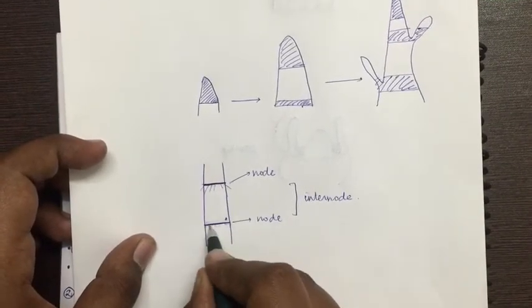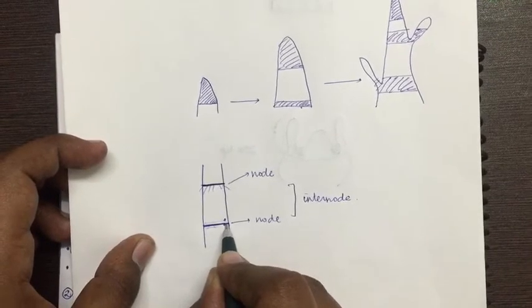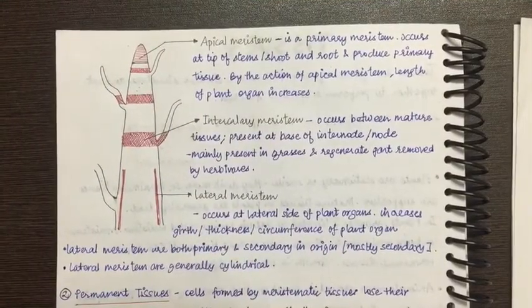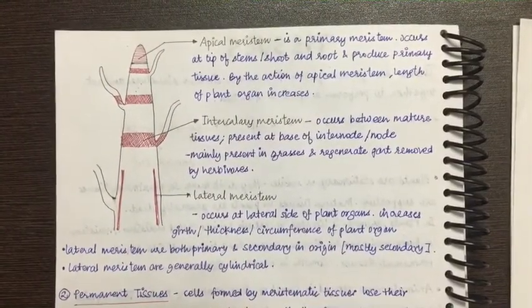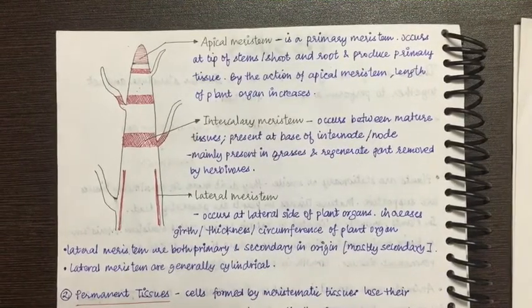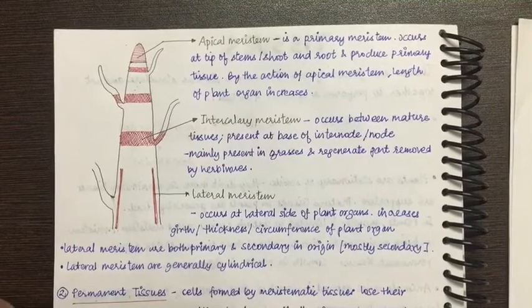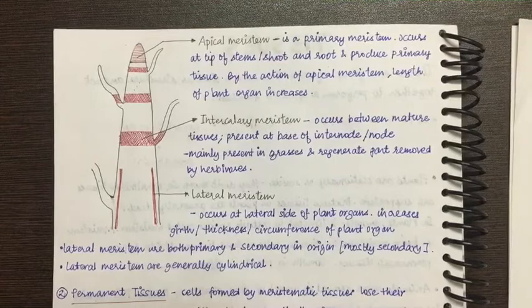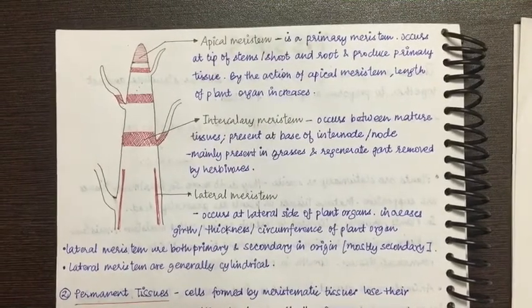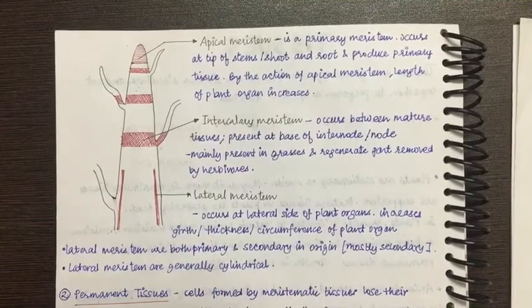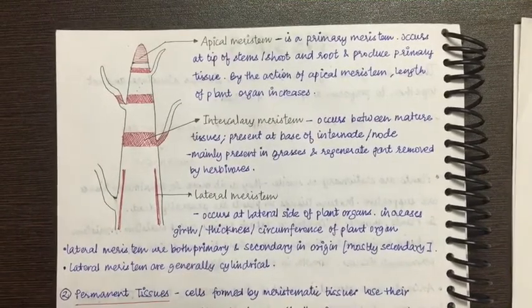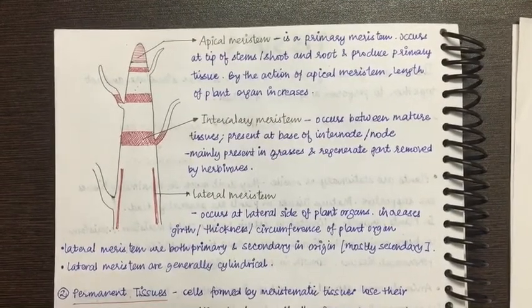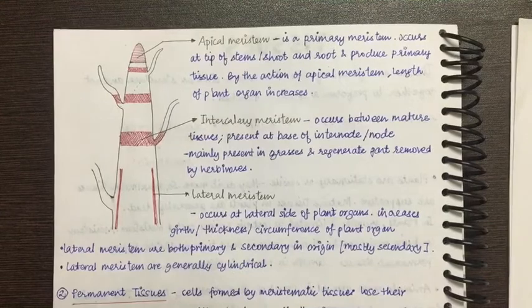The intercalary meristem is mainly found at the base of the internode. Its key function is seen in grasses: when herbivores like cows, buffaloes, and goats graze and cut the grass, the plant grows back again because the intercalary meristem is present at the base. It regenerates the parts removed by the herbivores. This is why intercalary meristem is mainly present in grasses.